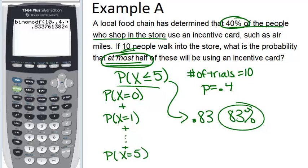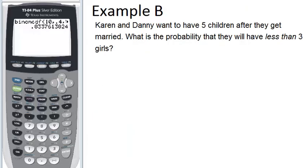Let's look at example B. Karen and Danny want to have 5 children after they get married. What is the probability that they will have less than 3 girls?